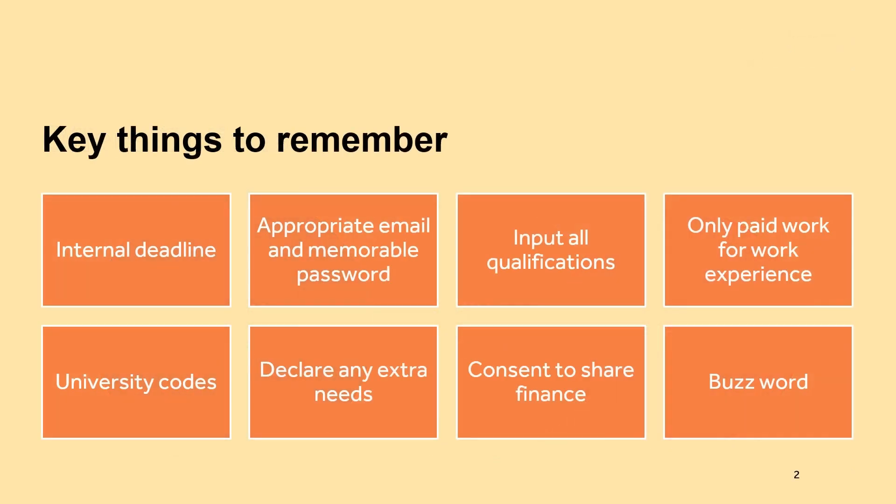Some key things to remember on the UCAS application: while the deadline is in January, your school or college might have its own internal deadline which is sooner, so that tutors have time to write their references — make sure you check what their internal deadline is. Make sure you use an appropriate email address as universities will see it on your application. A memorable password is also important because you don't want to be panicking on results day having forgotten your password.